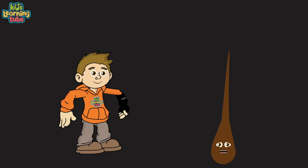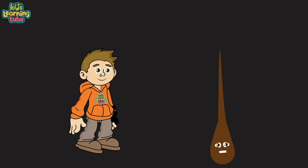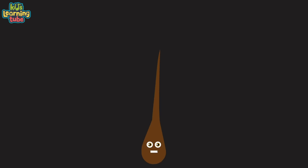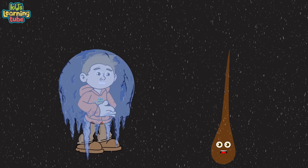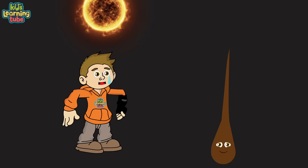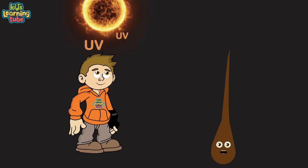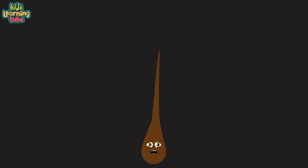I grow all over your body, and wouldn't you know, I'm mostly located on your head, and here's why I grow. I'm used as a source of insulation on top of your head. I'm a heat source when you're cold and keep you cool when you sweat. I protect you from ultraviolet rays that come from the sun.